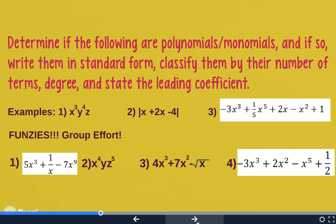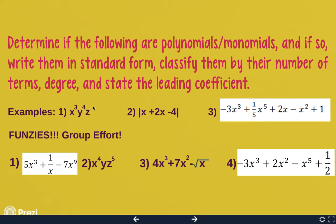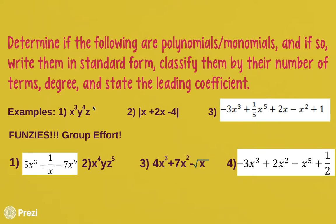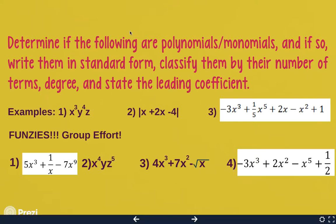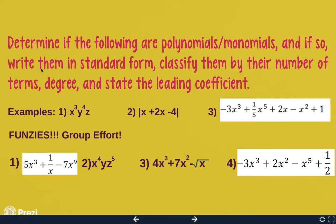In our example problems, sometimes there are more than one variable in each term, which means the degree is not just the highest exponent — we have to add all the exponents in a term to get the degree of that term. In example problems 1, 2, and 3, we're going to determine if the following are polynomials, write them in standard form, classify them by number of terms, degree, and state the leading coefficient.